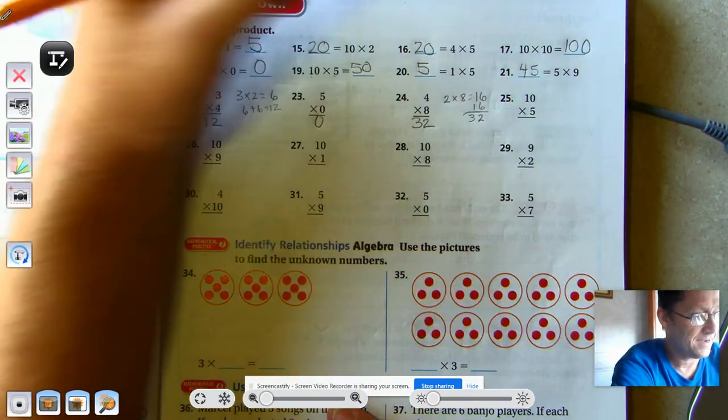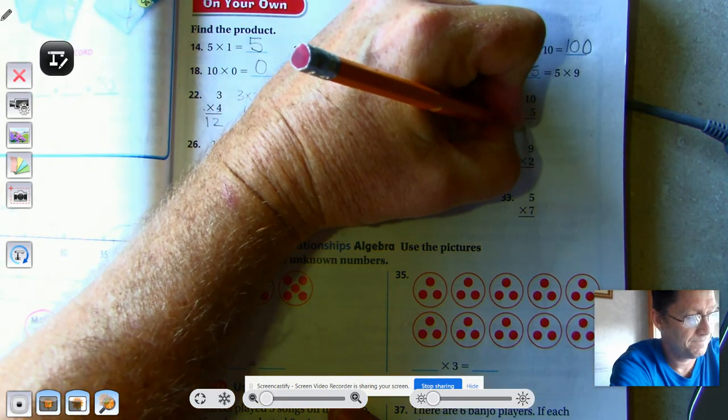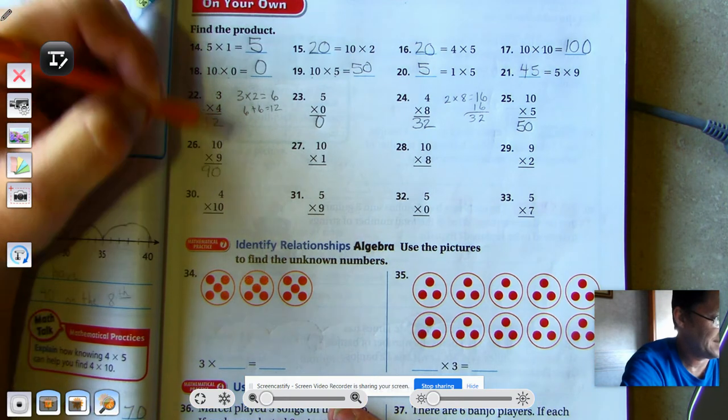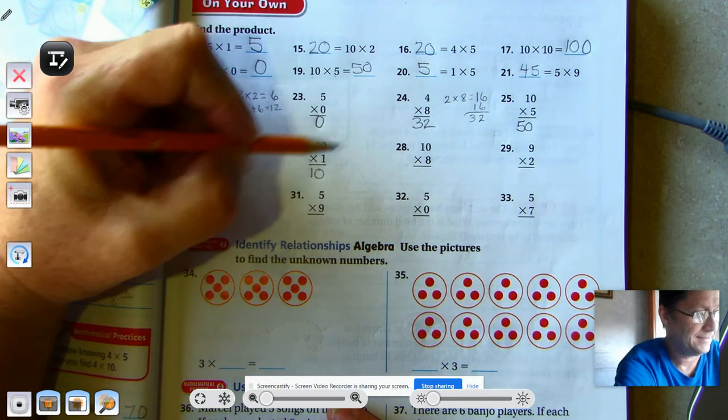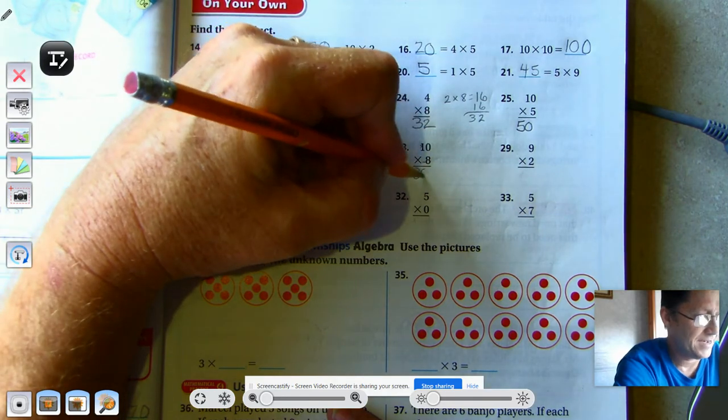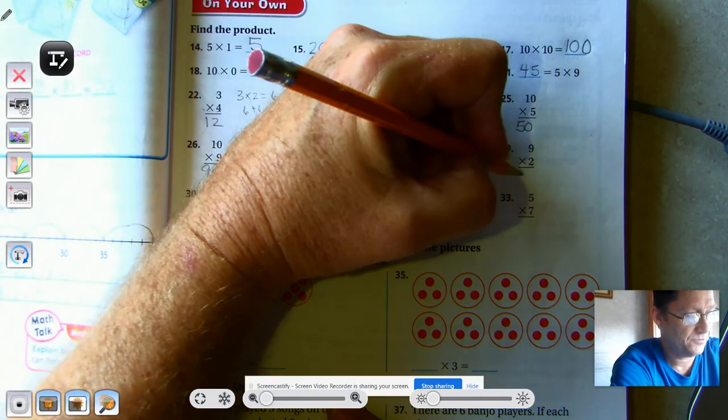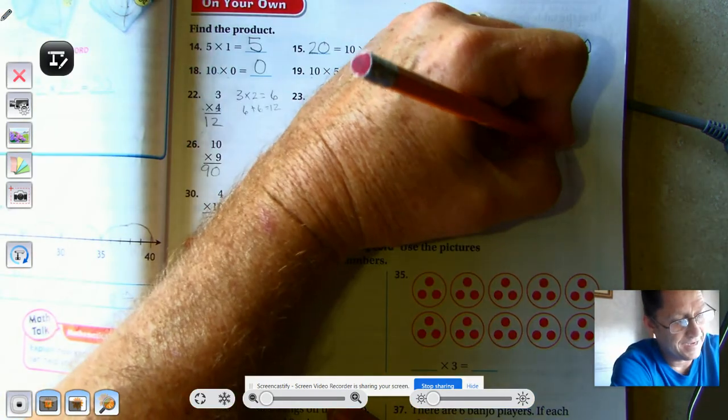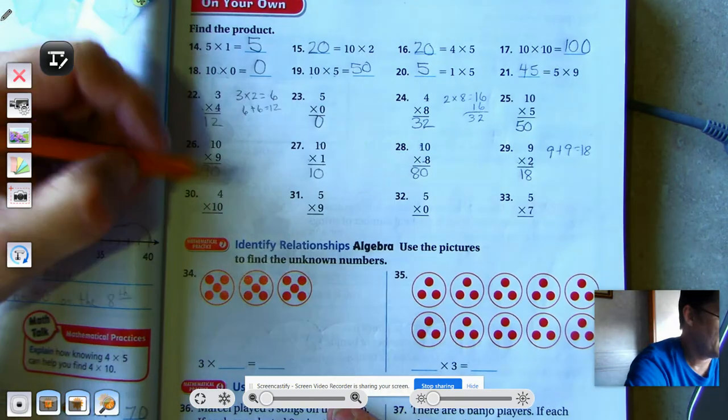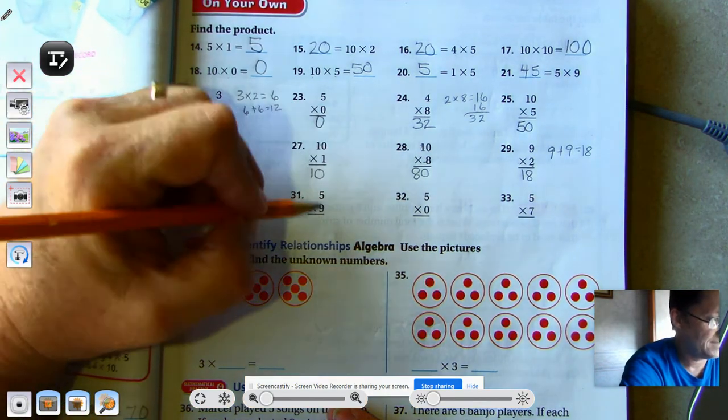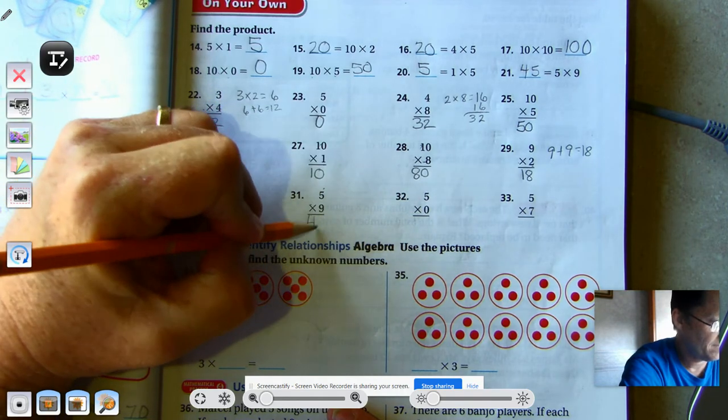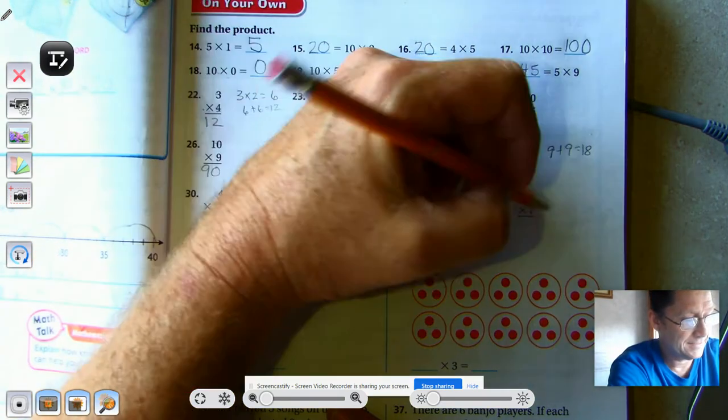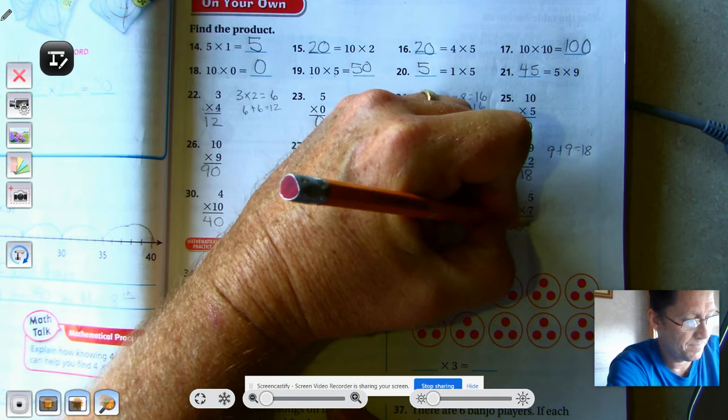10 times 5, 50. 10 times 9, 90. 10 times 1, 10. 10 times 8, 80. 9 times 2, 18, that's just 9 plus 9. 4 times 10, 40. 9 times 5, 45. 5 times 0, 0. And 7 times 5, 35.